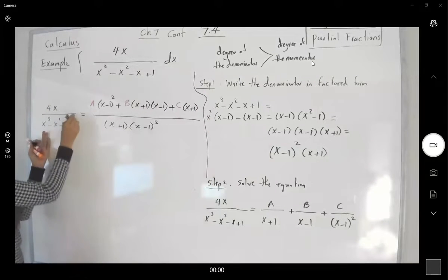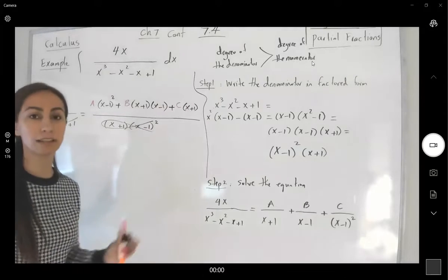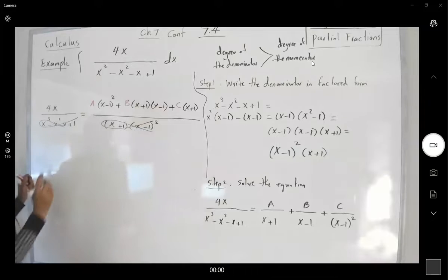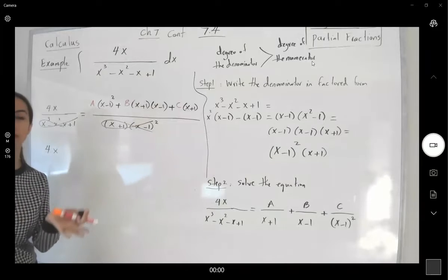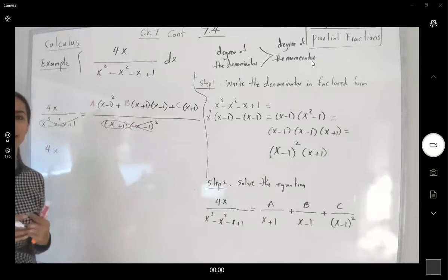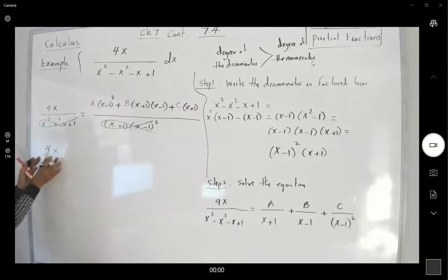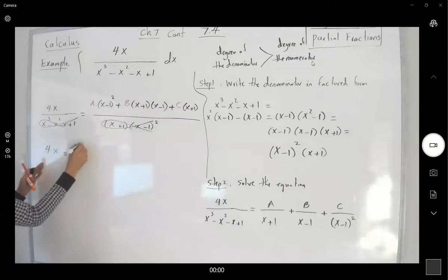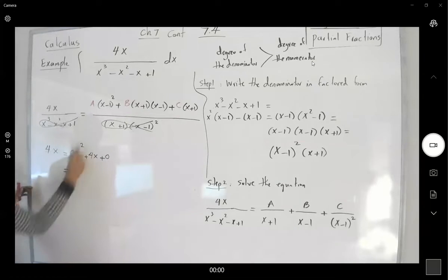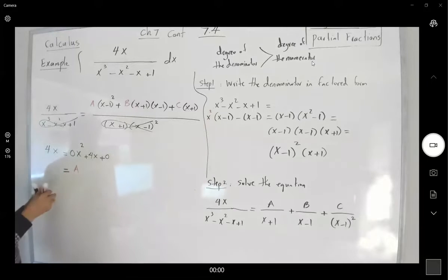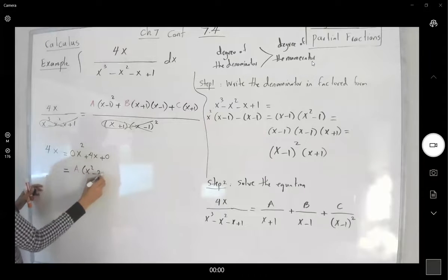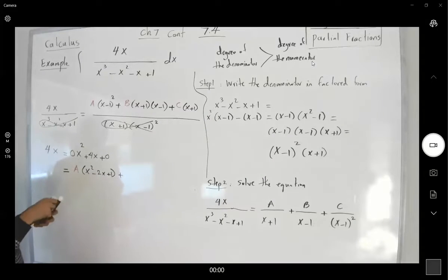The denominators are the same, so we only care about setting the numerators equal to each other. On the left we have 4x, which is just a linear expression — so the coefficient of x squared and the constant are both 0. That is: 0·x² plus 4x plus 0. On the right we have A times (x squared minus 2x plus 1), plus B times (x squared minus 1).